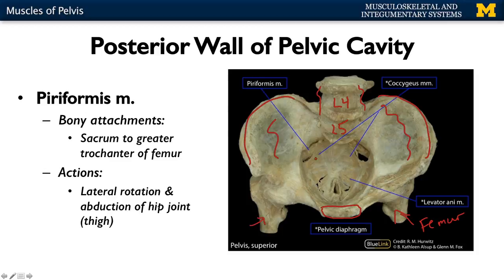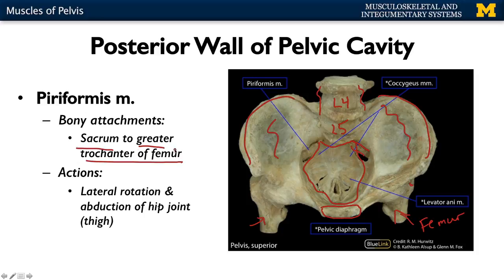Looking superiorly, you can see almost what we refer to as the floor of your pelvic diaphragm. Importantly, you have one muscle that's going to attach on the sacrum and end up attaching all the way over here at the greater trochanter — this is your piriformis muscle. We'll come back to the piriformis in the lower limb lecture, but it's notable here. Sacrum to the greater trochanter means it plays a role at the hip joint, specifically lateral rotation of the femur.